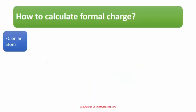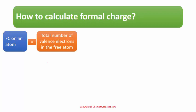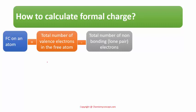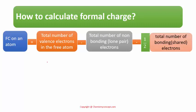The rule is: if we want to calculate formal charge on a particular atom, it is equal to total number of valence electrons in the free atom minus total number of non-bonding electrons (that is lone pair electrons) minus half of total number of bonding or shared electrons.